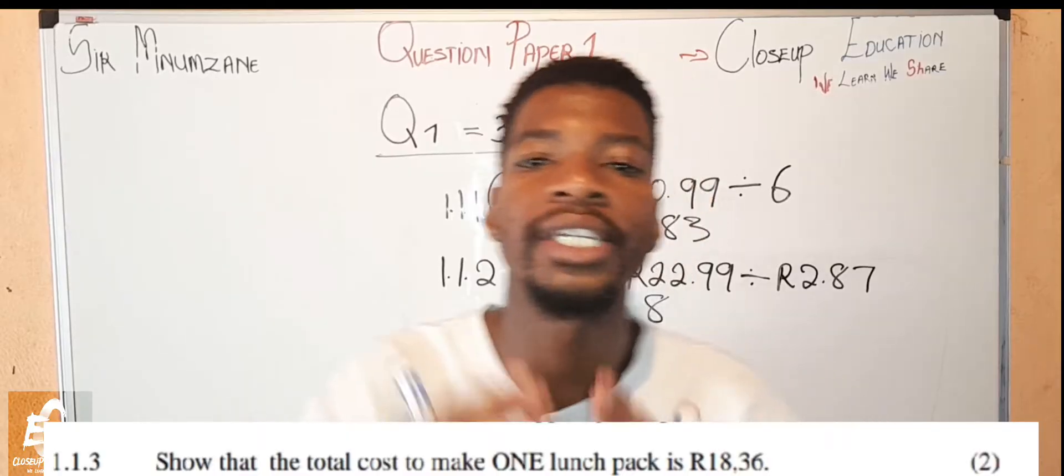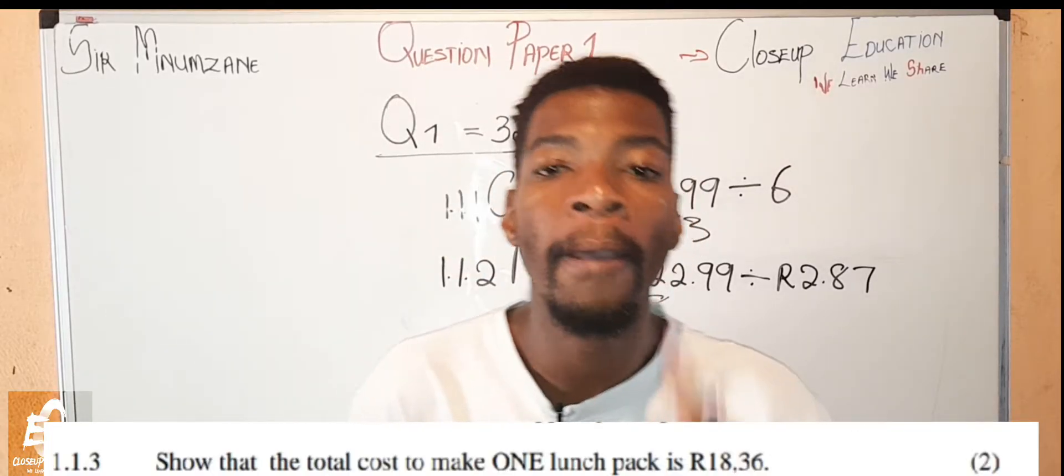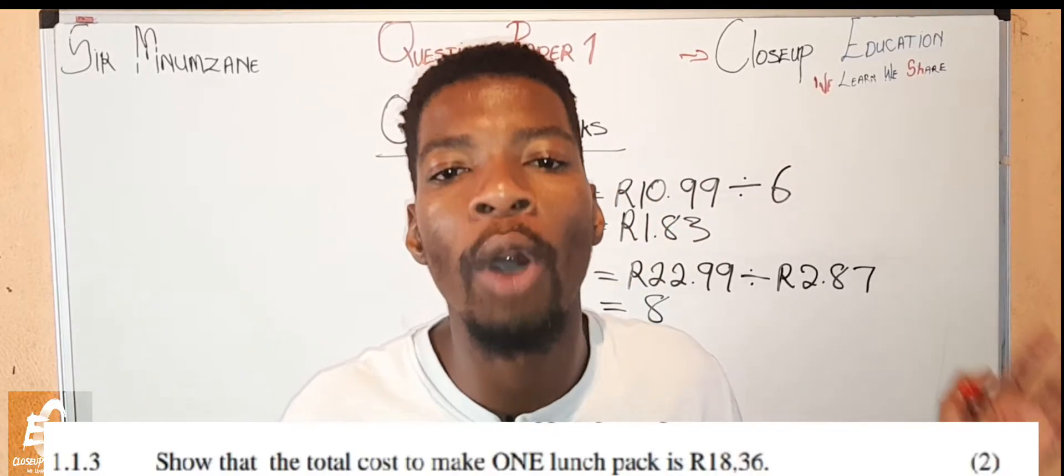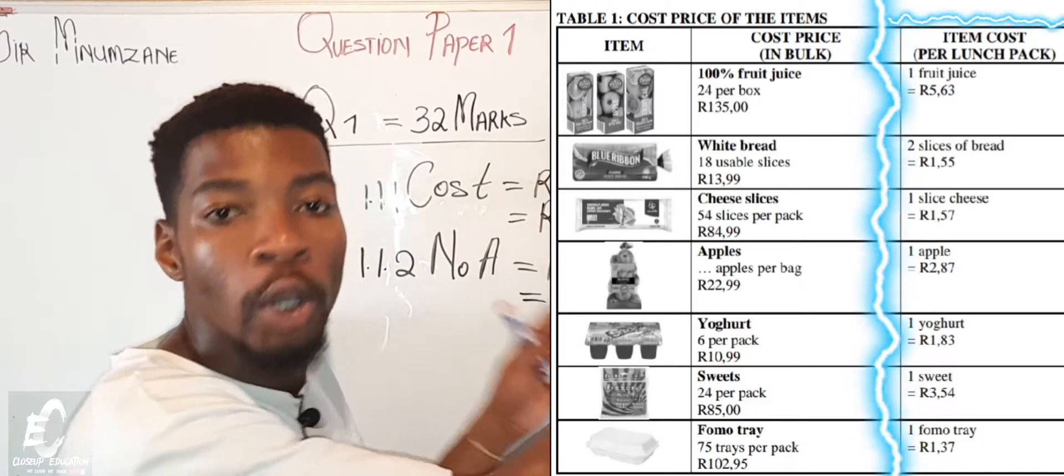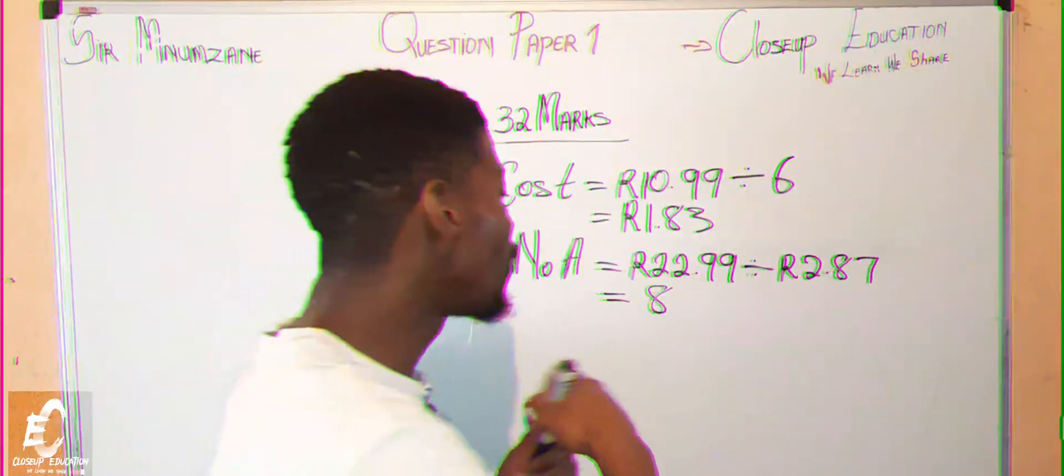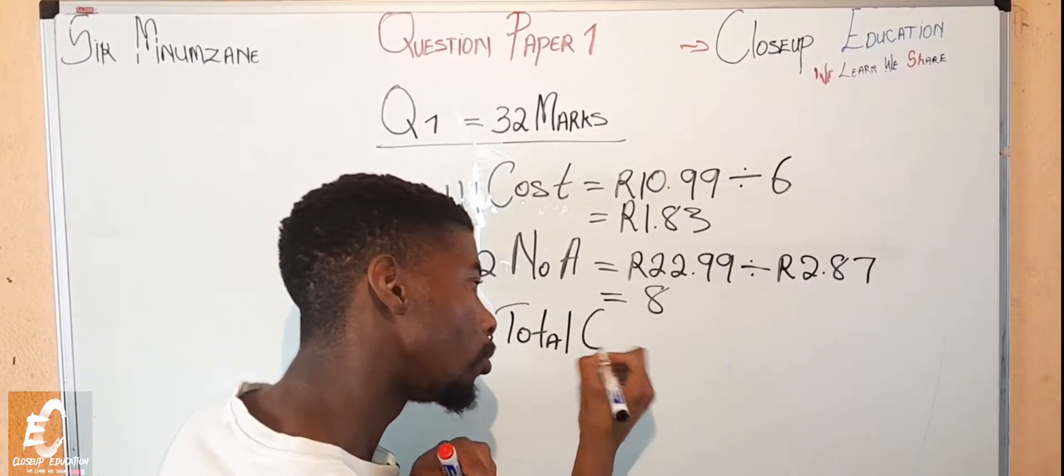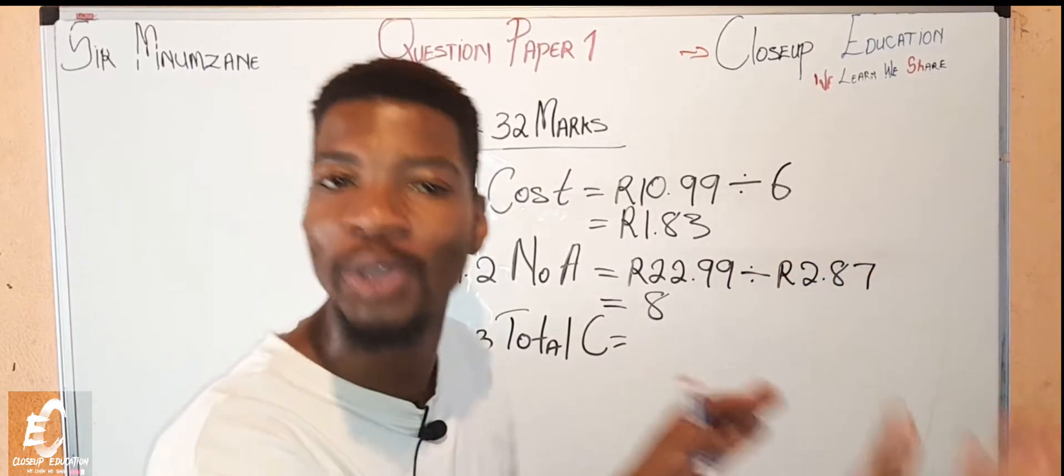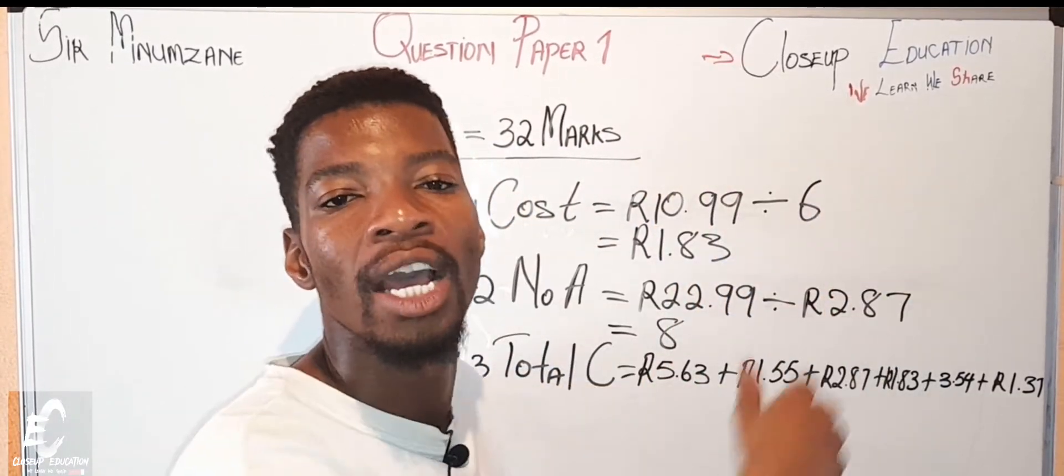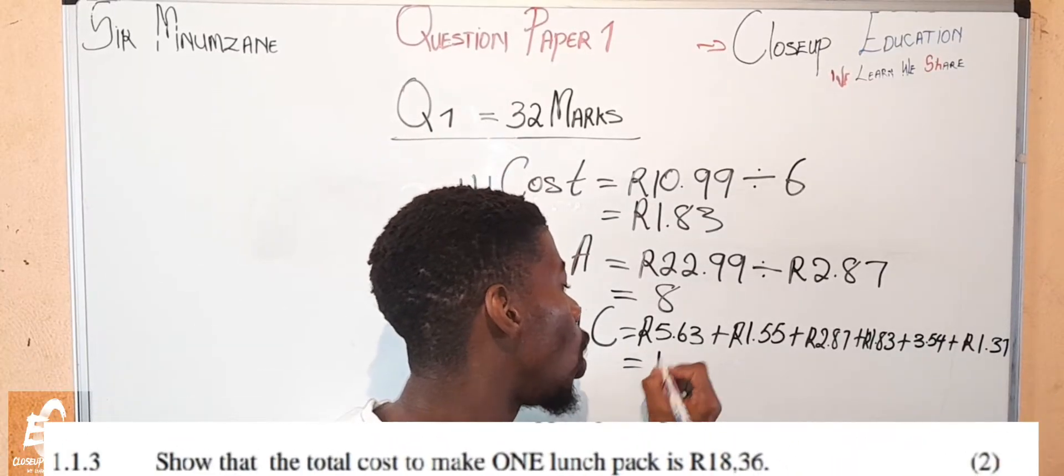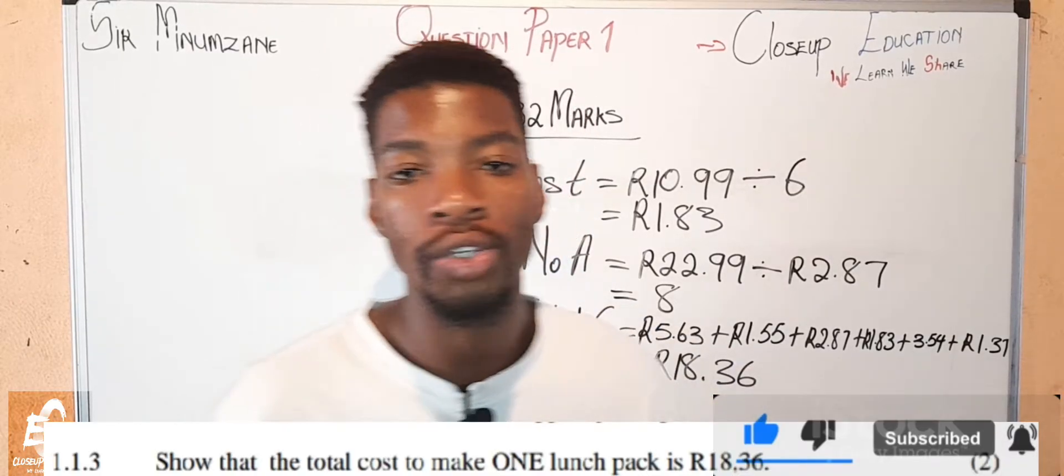Question 1.1.3 says determine how the total cost per lunch pack was calculated if it's found to be 18 rand comma 36 cents. It is our obvious answer. We just add the amount found from the last column because it's fixed per item. So we are obviously going to say 1.1.3, total cost. I'm not going to be writing the whole number, so I'm just going to be doing the magician stuff. Now that I've written the amount from the third column, this will obviously give us the total cost which is 18 rands comma 36. So this is how they found the total cost.